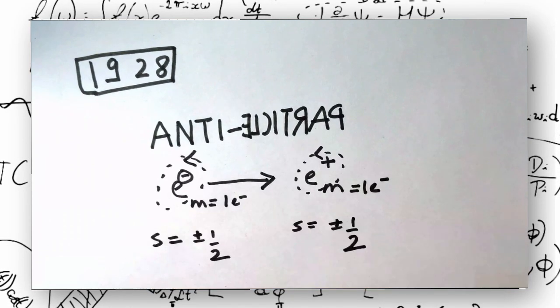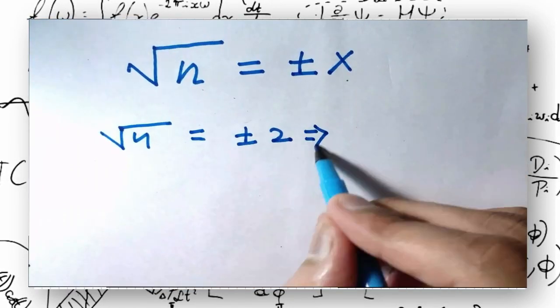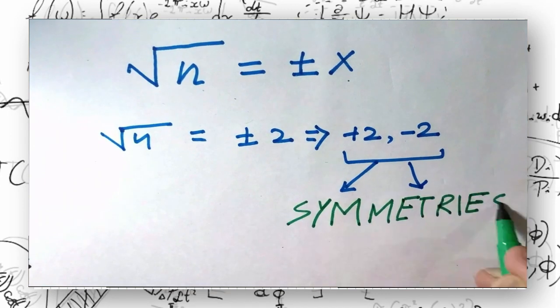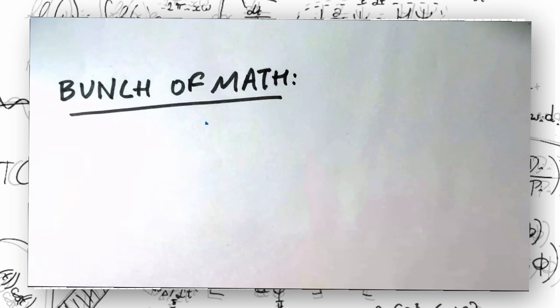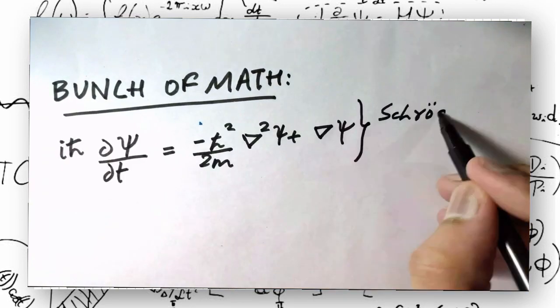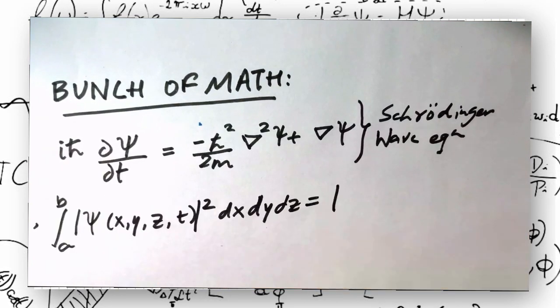He asserted that like the square root of any natural number can have two possible solutions, namely the roots of the square root of 4 are plus and minus 2. Symmetries in nature exist all around us. Therefore, he mathematically proposed the existence of a pair of particles called antiparticles.